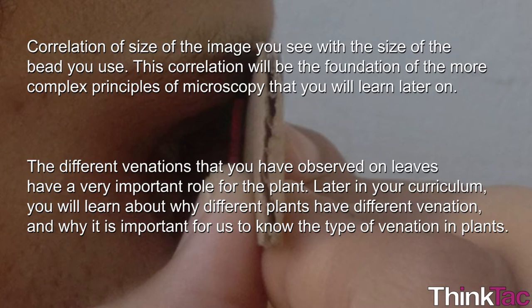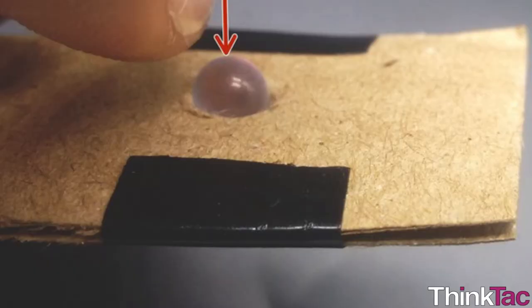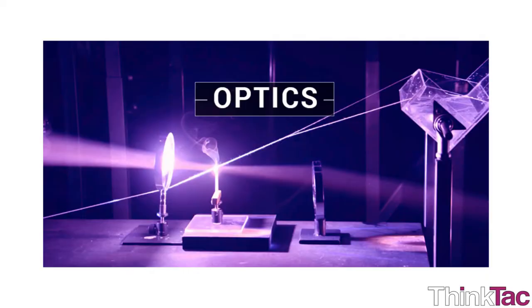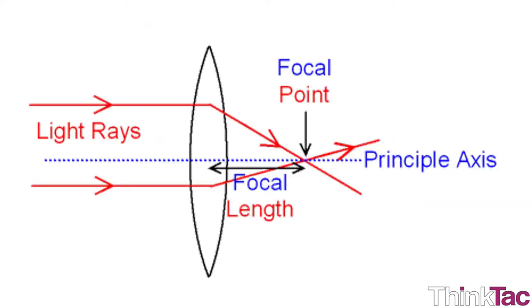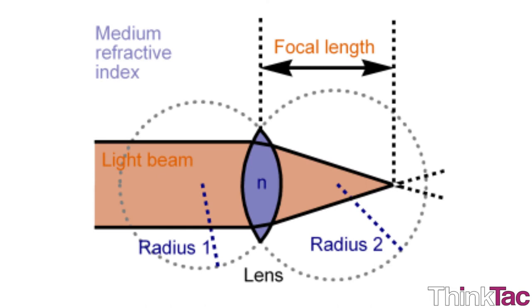The different venations that you have observed on leaves have a very important role for the plant. Later in your curriculum, you will learn about why different plants have different venations and why it is important for us to know the type of venations in plants. By this simple activity, you have gained insights into the basic principles of optics in physics that are very useful in understanding the details of some other branches of science like biology. Now you have an idea about the focal length of the bead and the effect of different beads, which is nothing but the different focal lengths thanks to the different radii of curvature, on the image that you see.